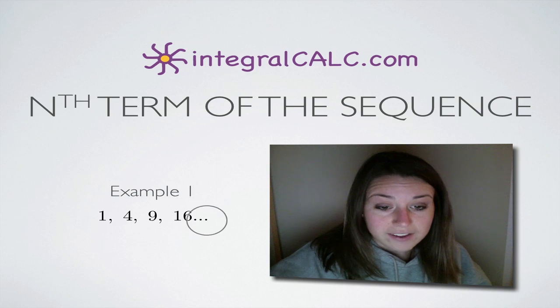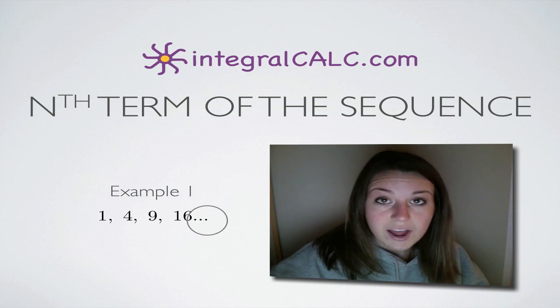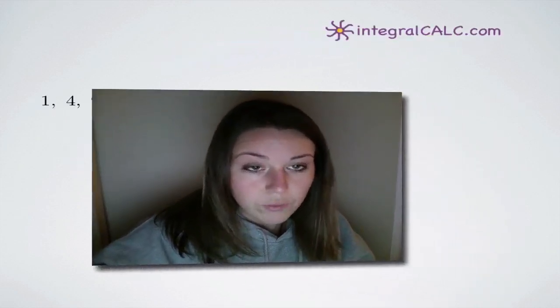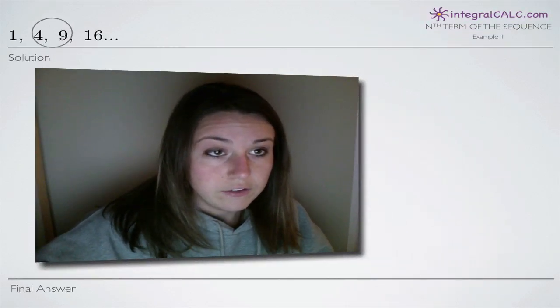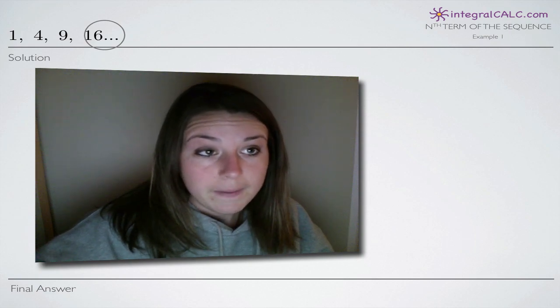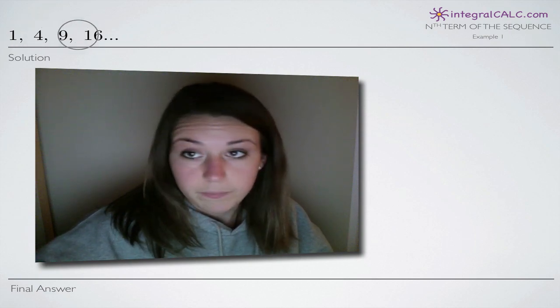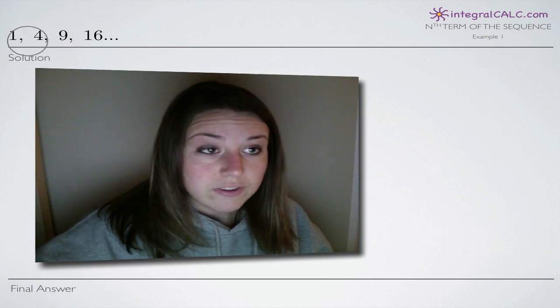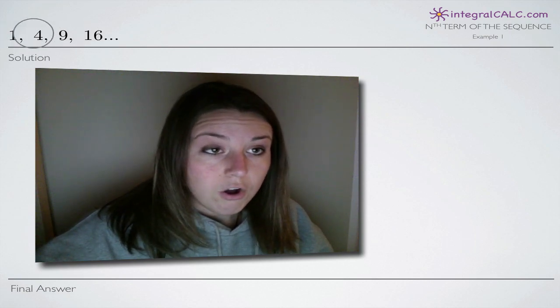On into infinity and they're asking us to find the nth term. So they're asking us to provide a formula that will give us any term in the sequence just depending on its order. The way that we're going to do this is look for a pattern in our sequence. This is a really common problem for this particular kind of concept because notice that they're all squares.